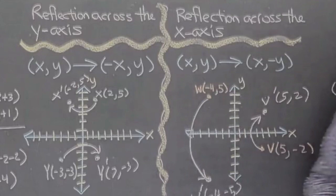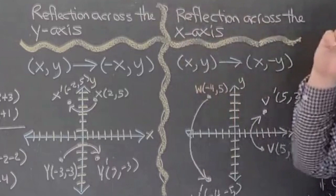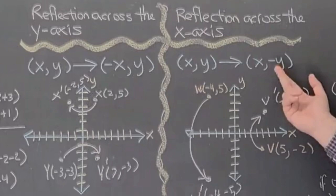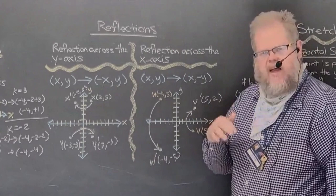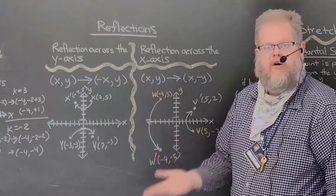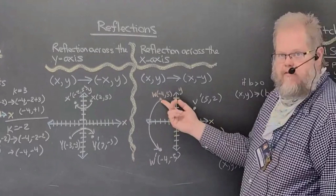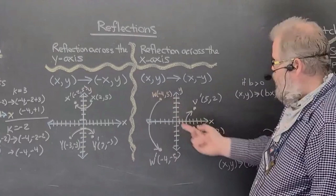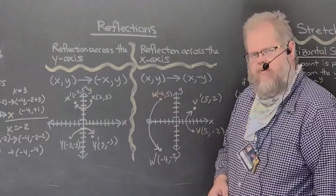So reflections involve changing the sign of either the x value — which reflects over the y-axis — or the y value, which reflects over the x-axis. If you change both x and y, that becomes a reflection over the origin, which we'll cover in another video. For example, W at negative four comma negative five would become positive four comma negative five, reflecting across the origin.